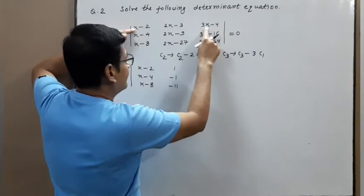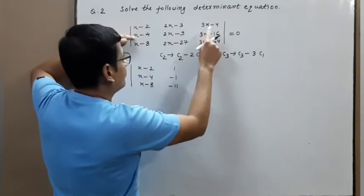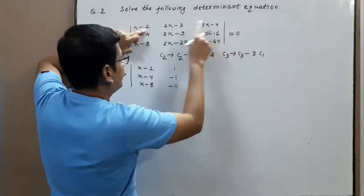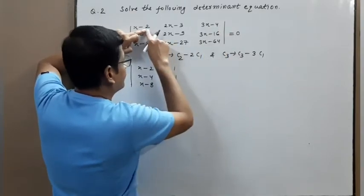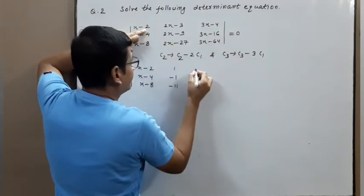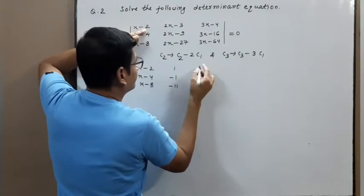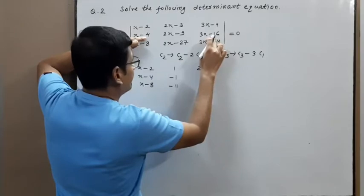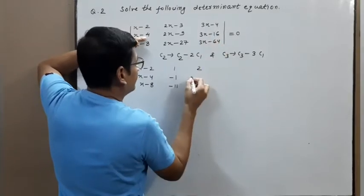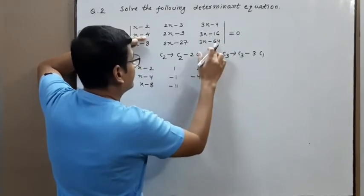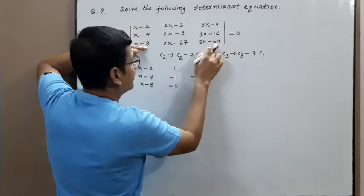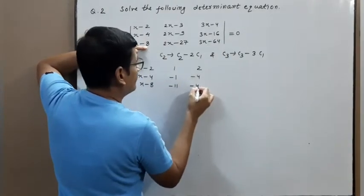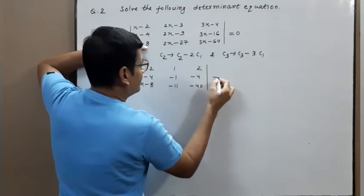Then +16 so −11. Then 3x − 3x cancels, leaving −4. −3 times this: −4+6 = +2. Then −16+12 = −4. Then −64+24 = −40. So the determinant equals 0.